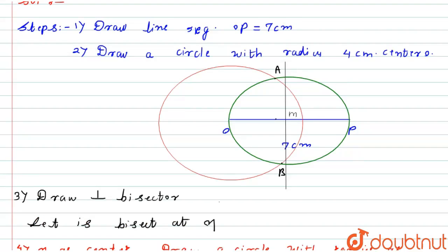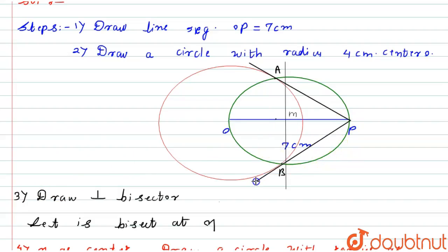This is the last step. By taking these intersection points, I will draw the tangents. This is the first tangent PA and this is the second tangent PB. This is the complete solution for this question. I hope you will like the solution, thank you.